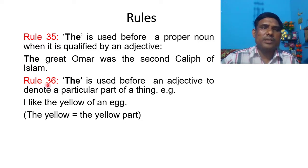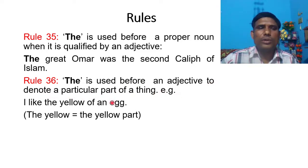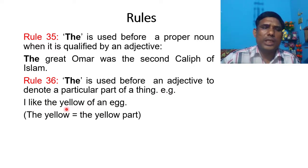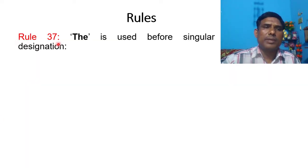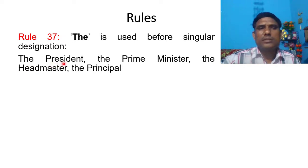Rule number 36: THE is used before an adjective to denote a particular part of a thing. For example, 'I like the yellow of an egg.' Yellow is an adjective; 'the yellow' refers to the yellow part. Rule number 37: THE is used before singular designations. For example: the president, the prime minister, the headmaster, the principal, etc.